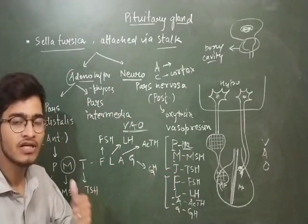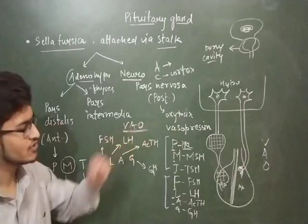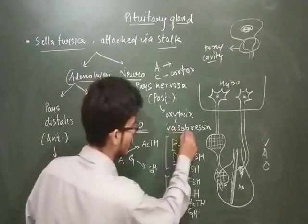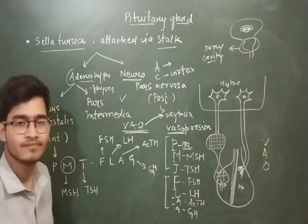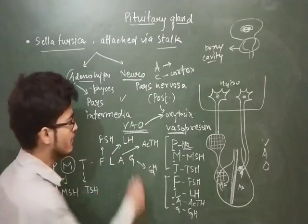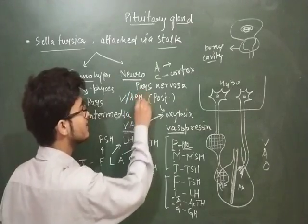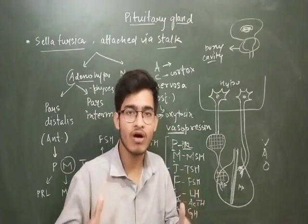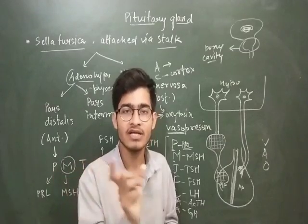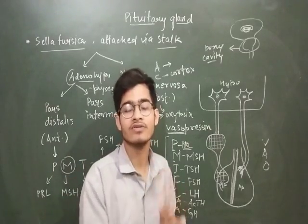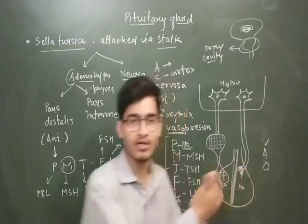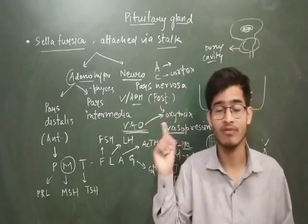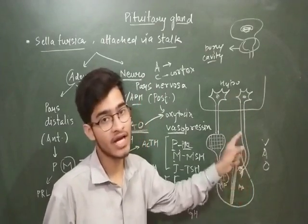For the posterior pituitary, the trick is WOW. V stands for Vasopressin, O stands for Oxytocin, and W/A — vasopressin is also known as ADH (anti-diuretic hormone), so V and A are connected. These two hormones — vasopressin and oxytocin — are stored and secreted by the posterior pituitary, but they are synthesized in the hypothalamus and sent here via axonal connections.